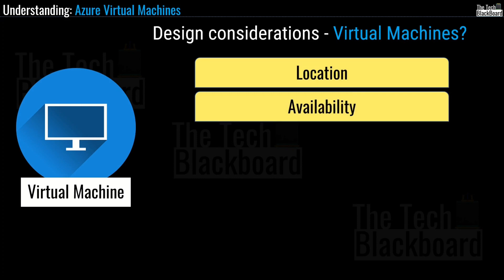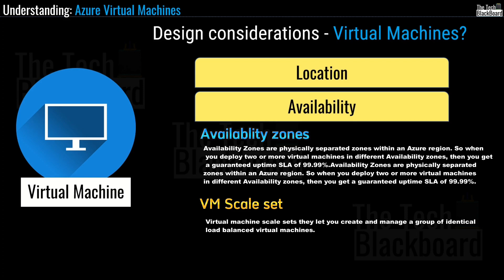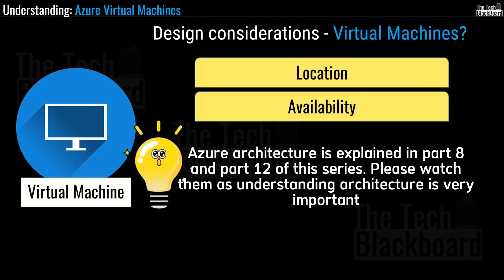The second consideration is availability. Under availability, there are two major sub-considerations: availability zones and virtual machine scale sets. Availability zones are physically separated zones within an Azure region. When you deploy two or more virtual machines in different availability zones, you get a guaranteed uptime SLA of 99.99%. Virtual machine scale sets let you create and manage a group of identical load-balanced virtual machines. Both concepts are discussed in detail in parts 8 and 12 of this series.